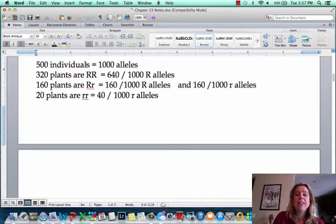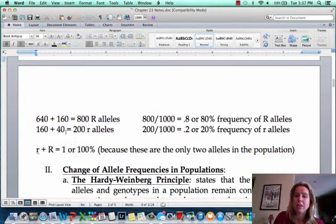If we add them all together to figure out how many total R alleles and r alleles there are, we have 640 R here and 160 R here, which gives us 800. Then we have 160 r and 40 r, which gives us 200. I wrote that out here: 640 plus 160 is 800, 160 plus 40 is 200. So we get a frequency for the R allele of 80% and a frequency of 20% for the r allele.